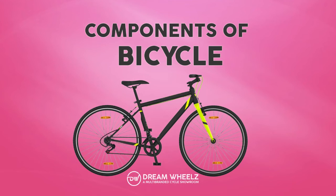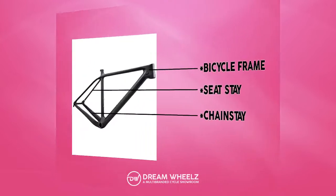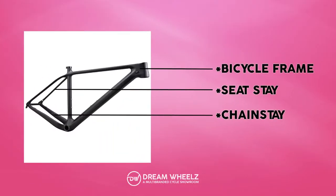Components of Bicycle. The main part of the bicycle is the frame, with a combination of seat stay and a chain stay.